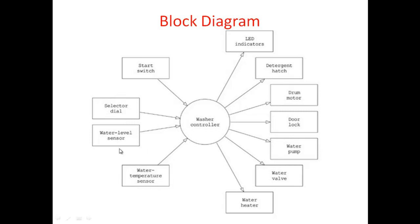Temperature setting is also given to you — you can set 30 degrees, 40 degrees, 50 degrees and so on. These are all the inputs you are giving. Then the role of your embedded software or program comes. After completing your washing, it will indicate using an LED indicator blinking that it is over. It will also indicate when you have to add soap — if soap is not there in your tray, it will prompt you to pour some soap. Then there is the drum motor, where your controller will declare whether the motor should run clockwise or anti-clockwise.